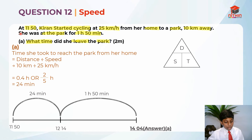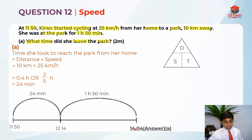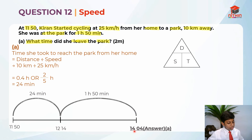The question tells us she was at the park for 1 hour 50 minutes. So from 12:14, adding 1 hour 50 minutes gives us 14:04. So the time she left the park was 14:04. This is the answer for Part A.